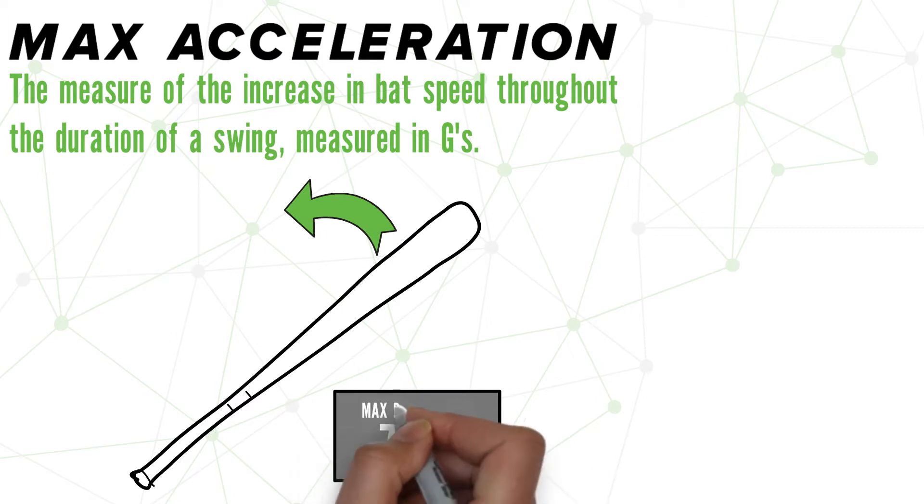To be clear, this metric is not the measure of how fast a bat is moving, that would be max barrel speed.